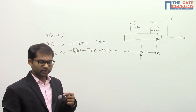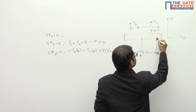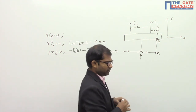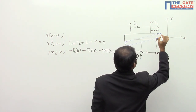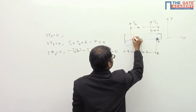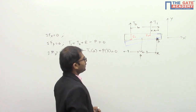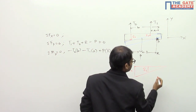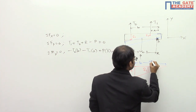That extra equation cannot come from static equilibrium, so we need to use a compatibility condition. At point A there is a support, so the rigid bar cannot deflect there. The bar will bend or deflect due to the loads, and the steel wire at one location will experience deflection delta2 and the other will experience deflection delta1.